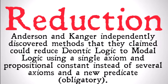Reduction. Anderson and Kanger independently discovered methods that they claimed could reduce Deontic Logic to modal logic, using a single axiom and a propositional constant — instead of several axioms and a whole new predicate for "obligatory." Basically, they created effectively identical systems that reduce all of Deontic Logic — all three extra axioms and the extra predicate — to a single new axiom and a single new propositional constant. It's a reduction because that's fewer axioms; it's a tighter, cleaner system. Or so it would seem.